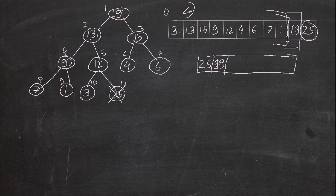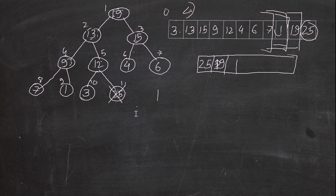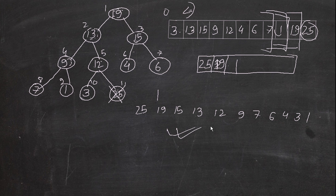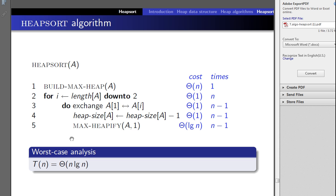We keep doing the same thing: max-heapify the existing array, swap A[1] and A[i], put the extracted maximum in the output array, decrease the size again. This goes on until the final arrangement. Since we're doing descending order, the final answer will be 25, 19, 15, 13, 12, 9, 7, 6, 4, 3, 1. That's how heap sort works — you just write this algorithm in whatever language you use: Java, C, C#, C++.